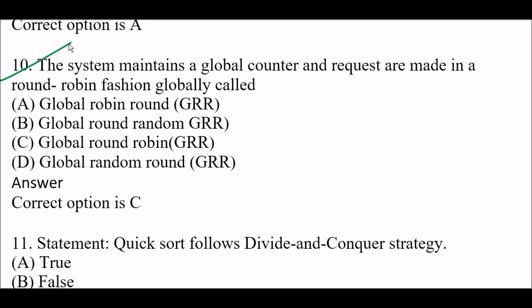Next question: The system maintains a global counter and requests are made in a round robin fashion globally — this is called Option A: GRR, Global Round Robin. Option B: Global round random. Option C: Global round robin. Option D: Global random round. The right answer is GRR, which means Global Round Robin.